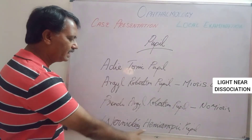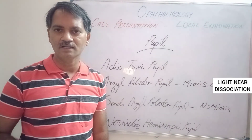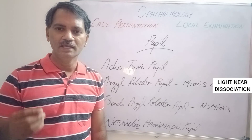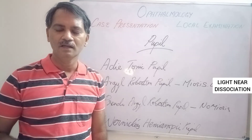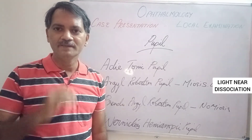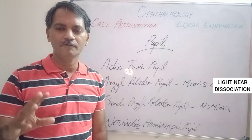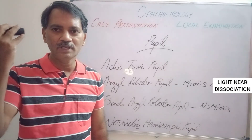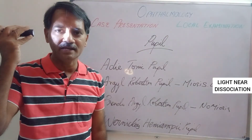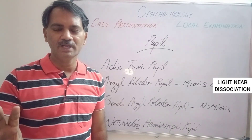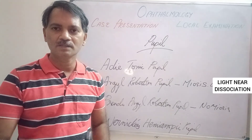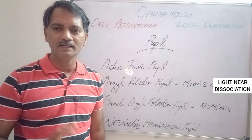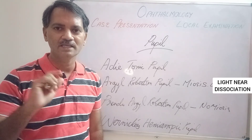The next condition is Wernicke's hemianopic pupil, which occurs in lesions of the visual pathway beyond the optic chiasma. In such a lesion, one half of the retina will not be functioning while the other half is functioning. If the nasal retina is not functioning and you put light on it from the temporal side, the optic nerve is not stimulated and the pupil will not constrict. But if you put light from the nasal side to stimulate the functioning temporal retina, the optic nerve is stimulated and the pupil constricts — that is Wernicke's hemianopic pupil.